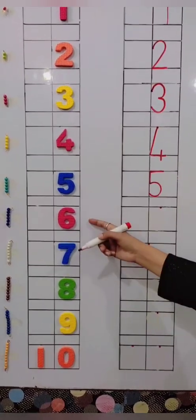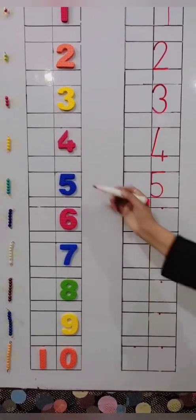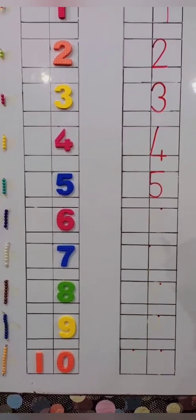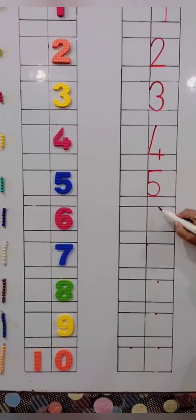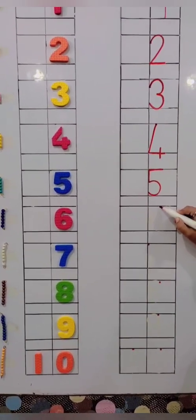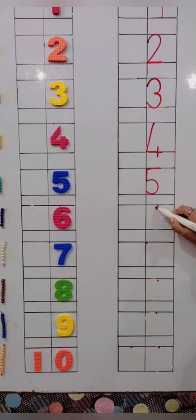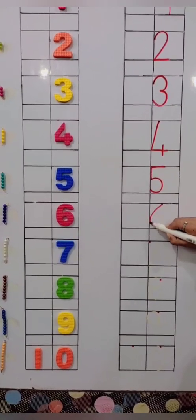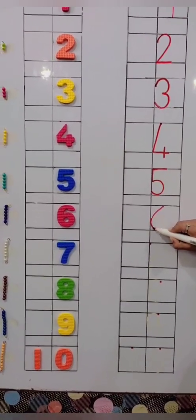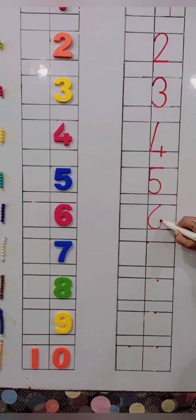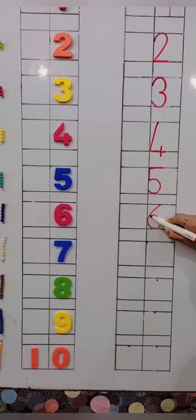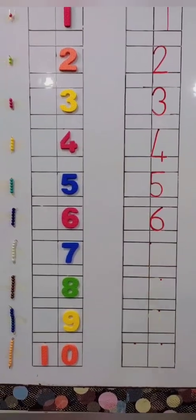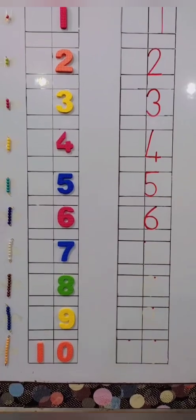What's come after 5? 6. What is the formation of 6? 6 is down and down and must turn around. 6 is down and down and must turn around.